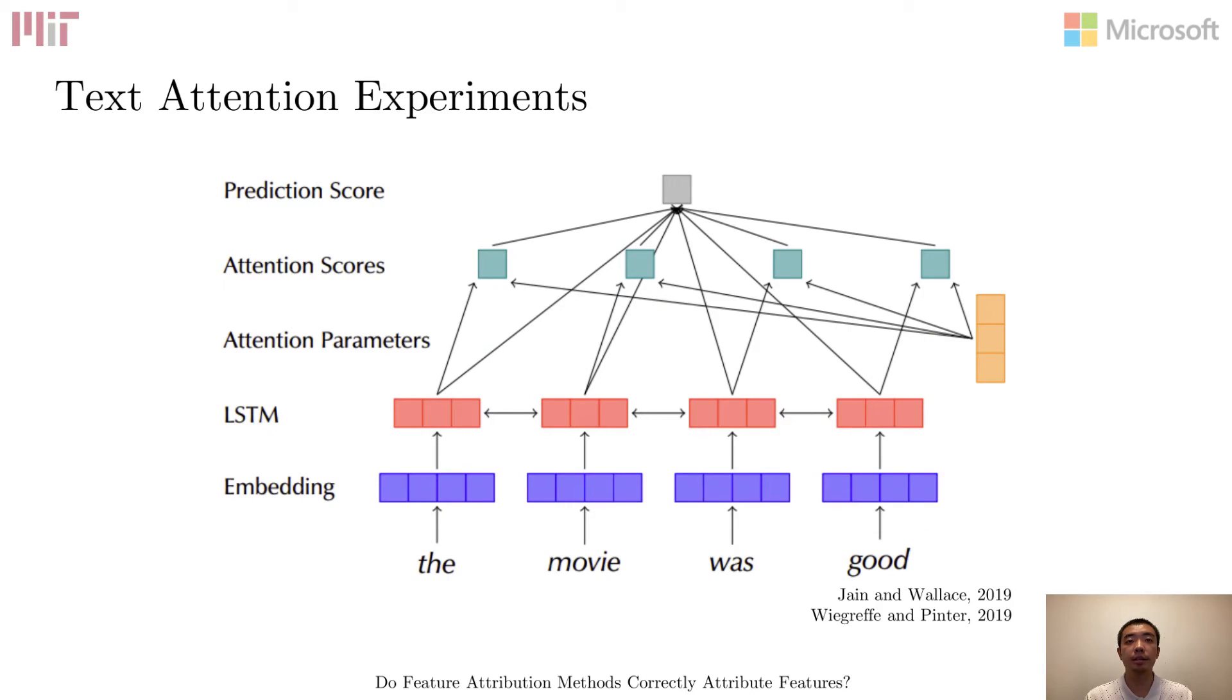For text attention models, we follow the architecture used by the two papers that investigate whether attention is explanation or not. This architecture uses a bidirectional LSTM network to get a contextualized encoding for each word. At the same time, a query vector for attention computation is learned. Then the dot product attention weight is computed from the word encoding and the query vector. And the final context vector is the attention weighted average of these contextualized encodings.